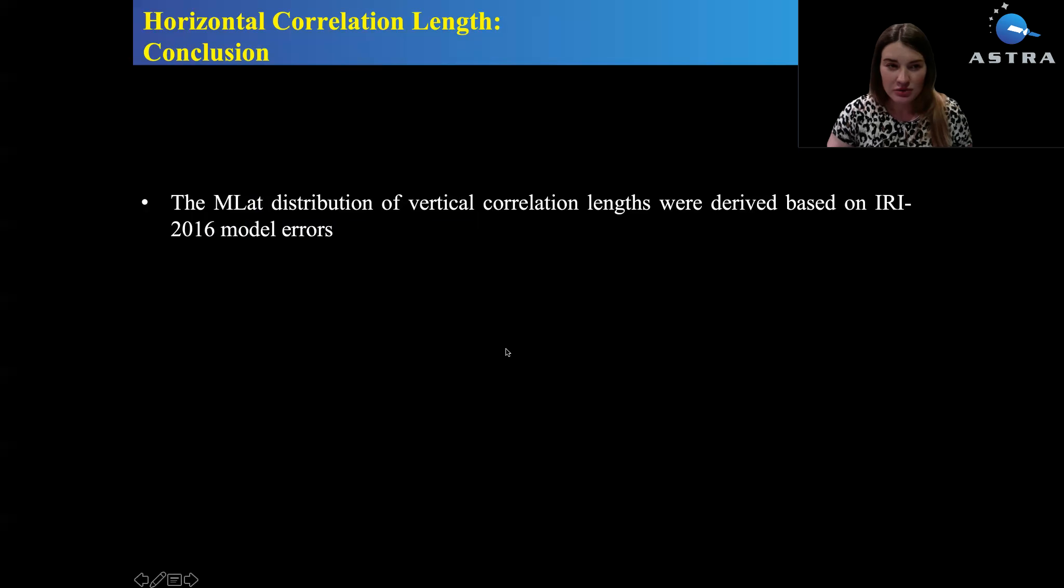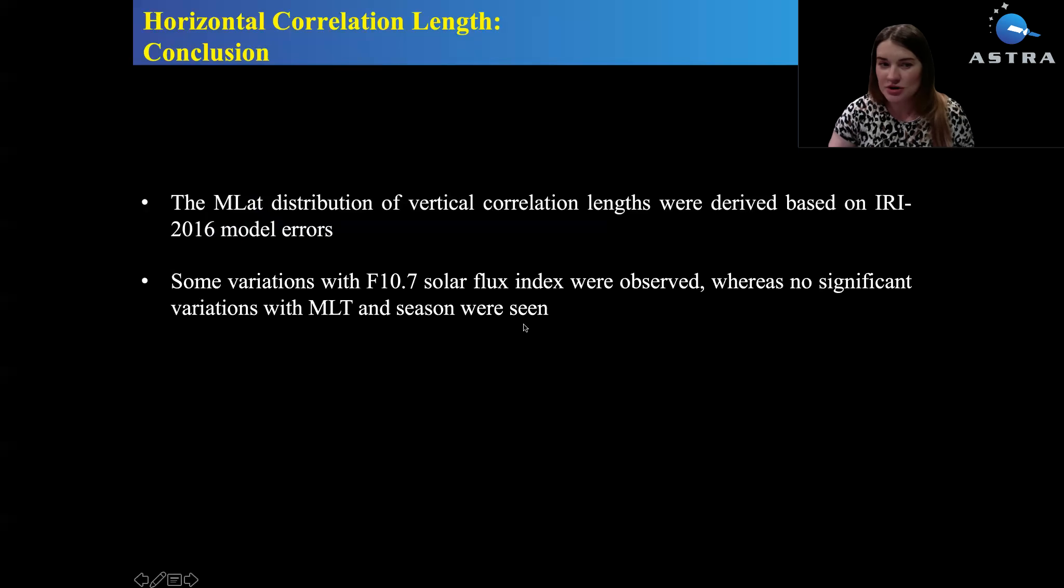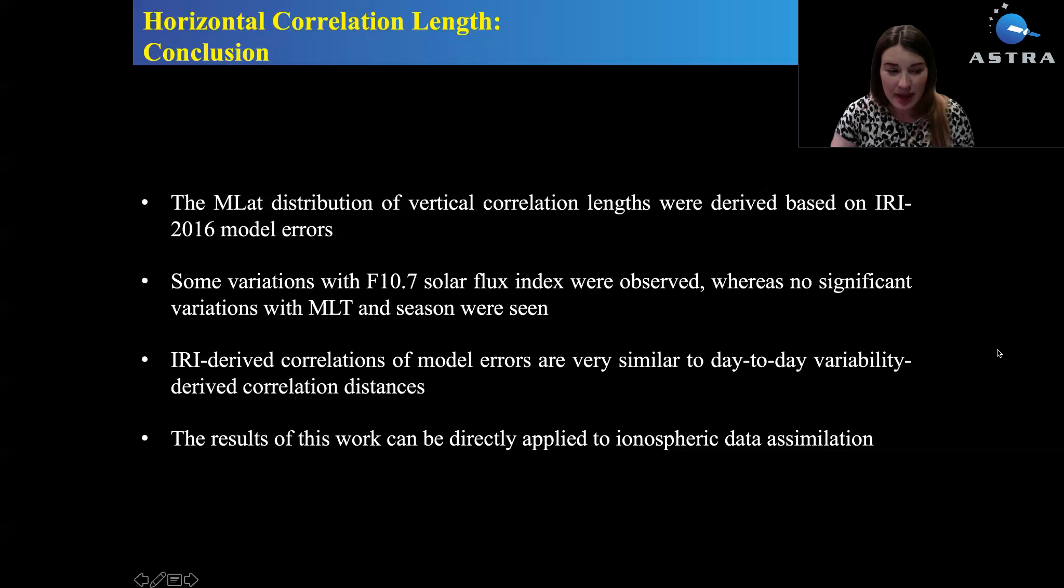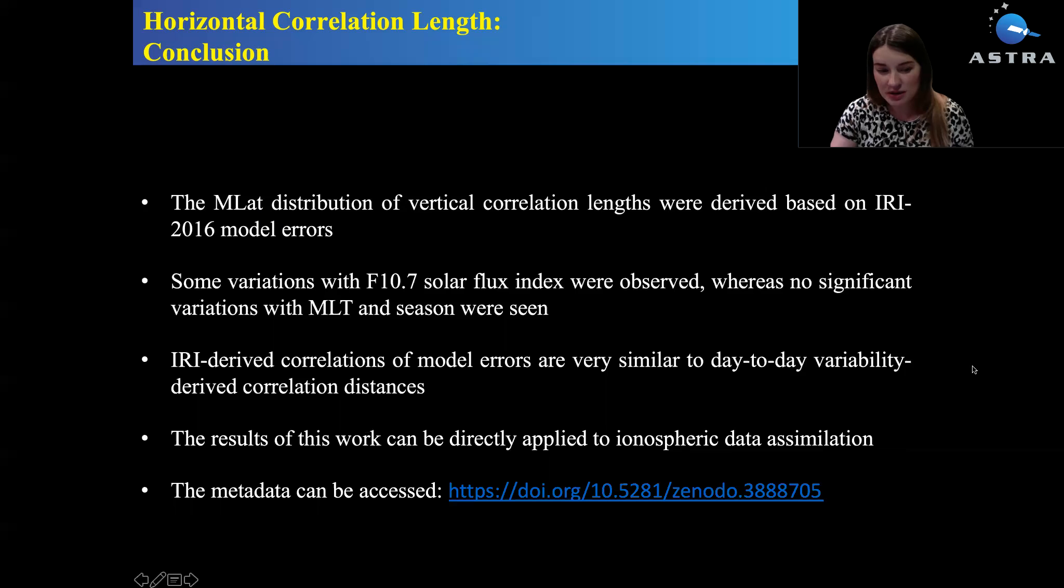In conclusion, the MLAT distribution of vertical correlation lengths were derived based on IRI-2016 model errors. Some variation with F10.7 solar flux index were observed, whereas no significant variations were observed for different MLT and season binning. IRI-derived correlations of model errors were very similar to the one derived from day-to-day variability. The results of this work can be directly applied to ionospheric data assimilation.